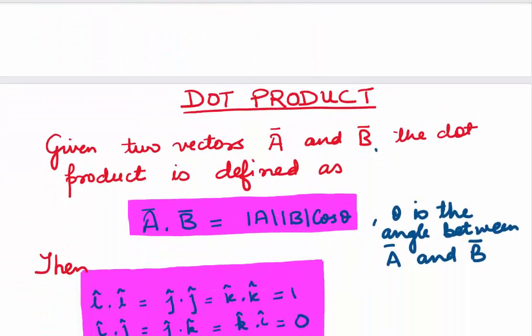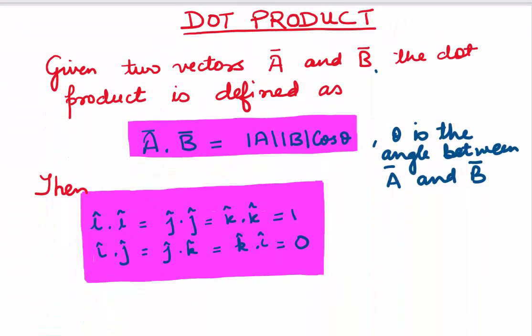Let's start with the dot product. If we are given two vectors A and B, then the dot product A dot B is given by modulus of A times modulus of B times cosine of theta, where theta is the angle between the two vectors A and B.